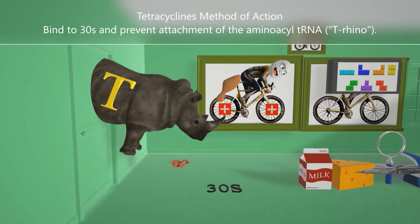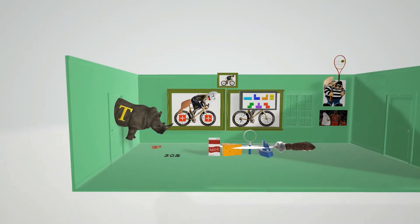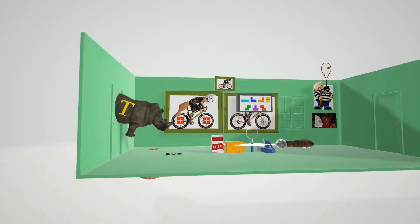This reminds us that the tetracyclines bind to the 30S subunit and prevent attachment of the aminoacyl tRNA. This T rhino reminds us of tRNA, and he can't attach to the 30S subunit. That's what tetracyclines do—they block this attachment.